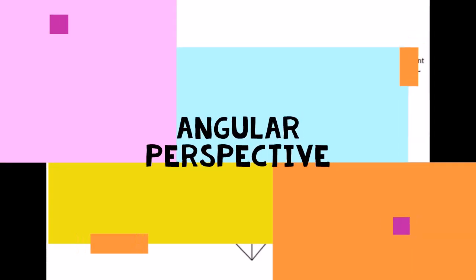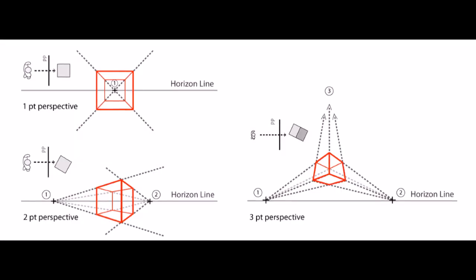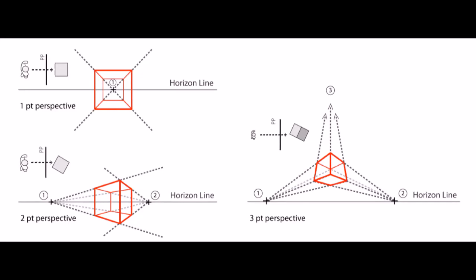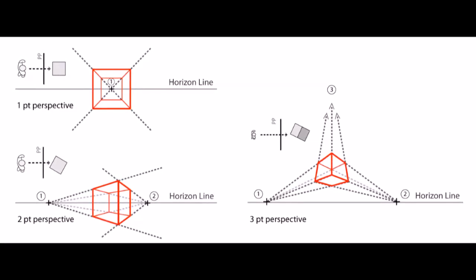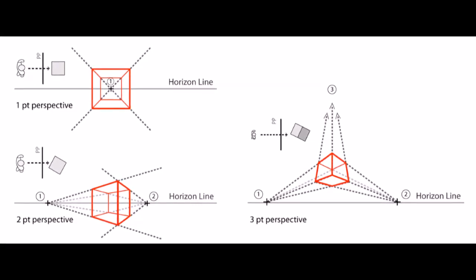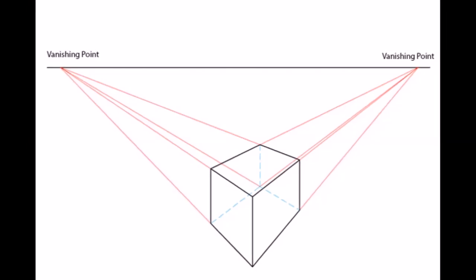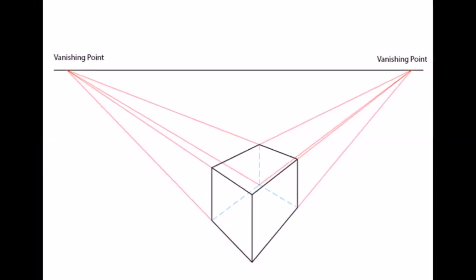Angular perspective is a type of linear perspective. All categories of linear perspective include a horizon line and a stationary point — the position of the observer. In two-point perspective, there exist two points from which an object's lines radiate; the sides of the object vanish to one of two vanishing points on the horizon line.